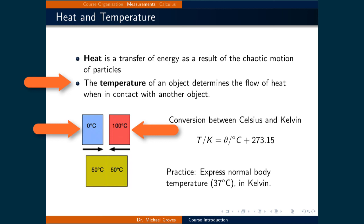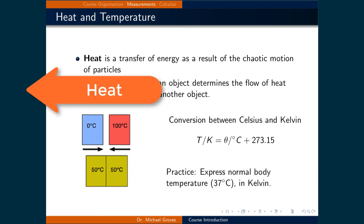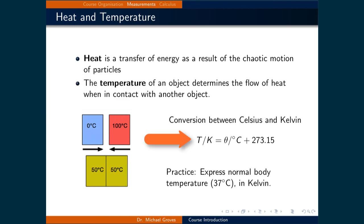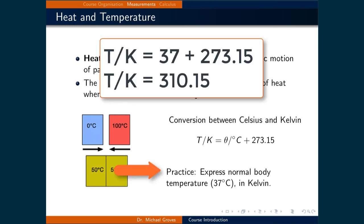We will almost exclusively use the Kelvin temperature scale, which is defined as the temperature in Celsius plus 273.15. So the normal body temperature of 37 degrees Celsius converted to Kelvin is 310.15 degrees Kelvin.